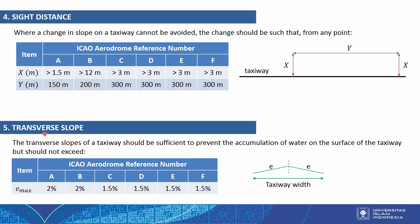The fifth component is transverse slope. The transverse slopes of a taxiway should be sufficient to prevent the accumulation of water on the surface. The transverse slope should not exceed the maximum values given in the table, based on the ICAO aerodrome reference code letter from A to F. For example, the slope e (in percent) from the centerline of the taxiway to the edge should not exceed the specified value.